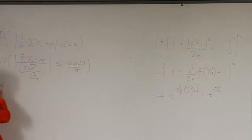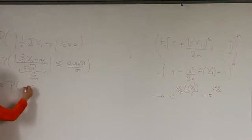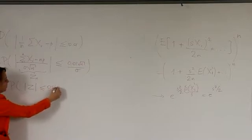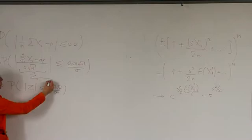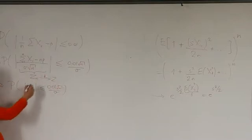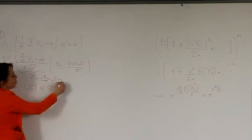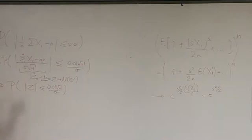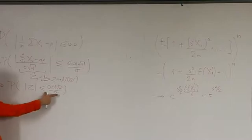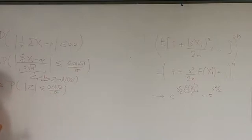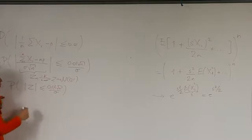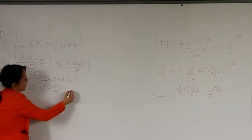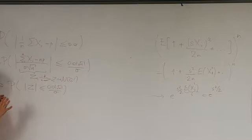This is my z sub n normalized in the way we have in the statement of the central limit theorem. So I'll say this is approximately equal to the probability that z in absolute value is less than or equal to 0.01 square root of n over sigma. Remember, z_n converges to z in distribution as n goes to infinity. What is z? z is normal 0,1. So this is approximately the probability that a standard normal is in absolute value limited to this range. And as long as n is large enough that this probability is around 95%, I am done.